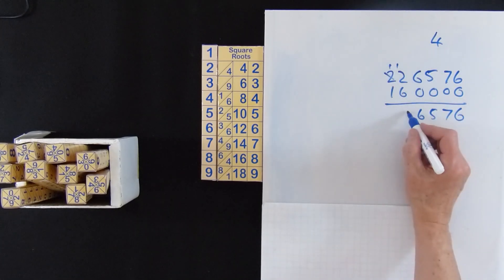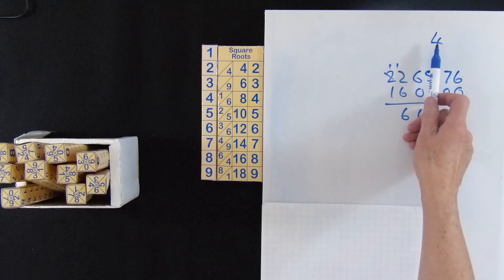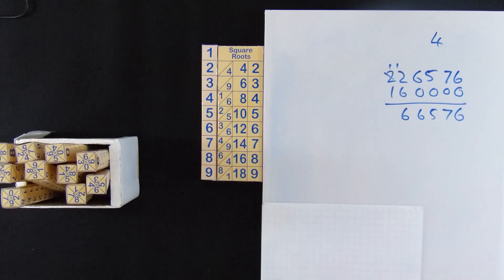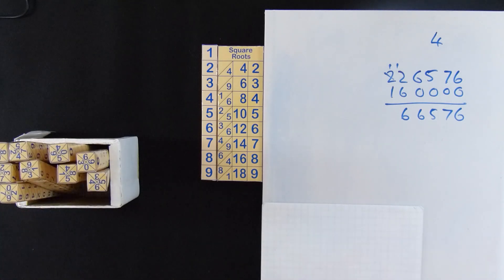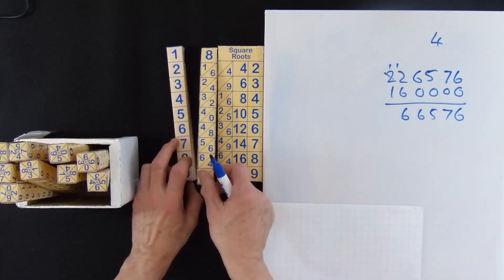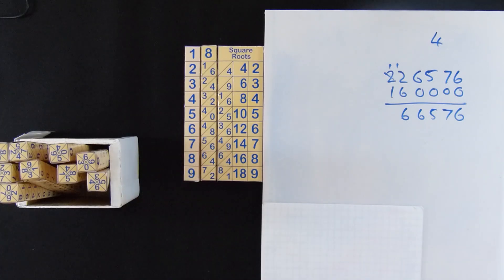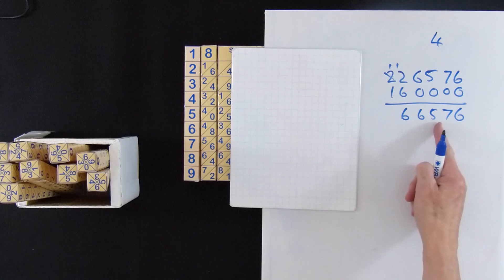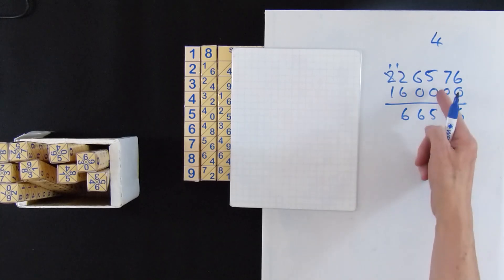And that's a new number we've got to deal with. Now, because it was a 4 that we got, if you look across from 4 you'll see that we need to put in an 8. So we take an 8 and put it in now. And now we've got to look for our next set of numbers, which is the 656 down to the next pair.